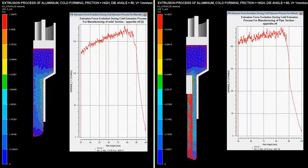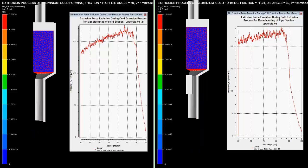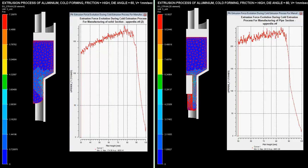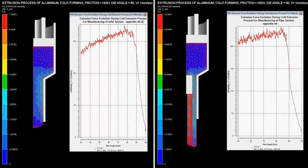As the billet height reduces, the force required for pipe extrusion increases. The graph between extrusion force and billet height shows that extrusion forces are higher during the pipe extrusion process than solid shaft extrusion.